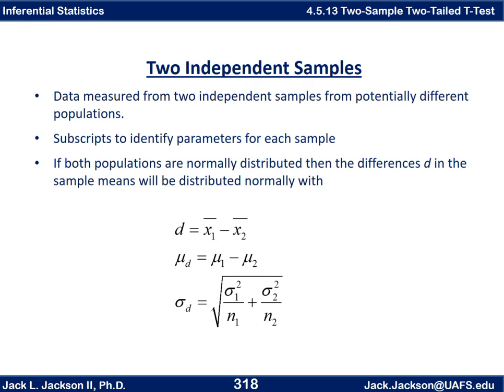If both populations are normally distributed, then the differences in the sample means will be distributed normally, with the difference being x-bar one minus x-bar two. The mean of the differences, mu of the differences, is mu one minus mu two. The variance of the difference is the sum of the variances, but to get a standard deviation we need to take the square root. So the standard deviation of the sample differences is the square root of sigma one squared over n one plus sigma two squared over n two.